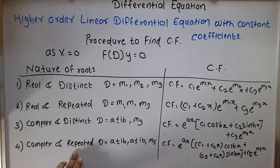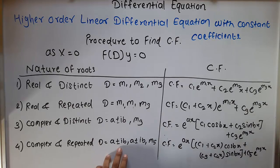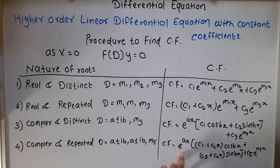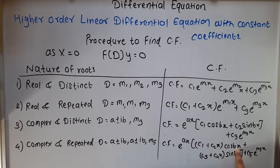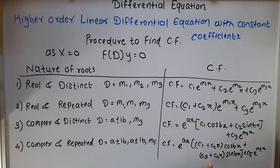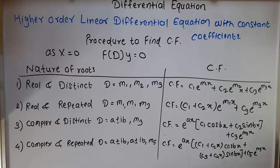Rule 4 — complex and repeated roots: if the roots are a ± ib repeated (a ± ib, a ± ib) and m, then CF = e^(ax)·[(c1 + c2·x)·cos(bx) + (c3 + c4·x)·sin(bx)] + c5·e^(mx). These are the four rules to find the value of CF.